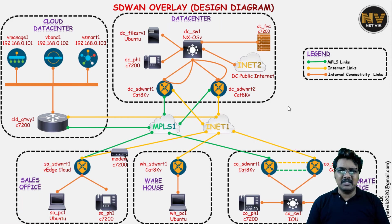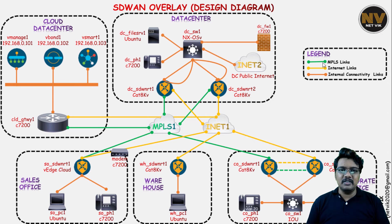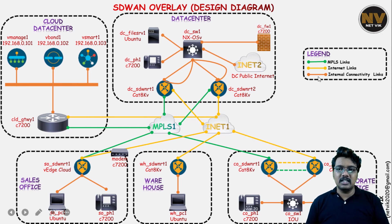That is pretty much it about the design. Please note that the color codings of the interfaces are very important here — this is the reason I requested you to take a color printout. I am going to quickly walk you through the other slides. I do have green for the MPLS link, yellow for the internet link, and brown representing the internal connectivities.